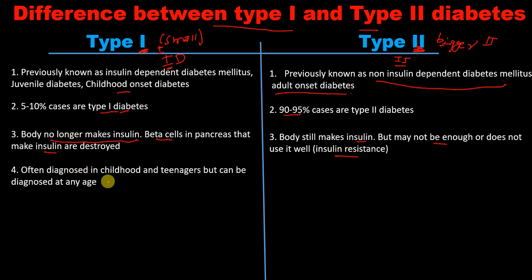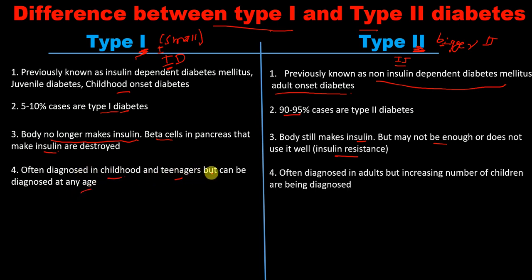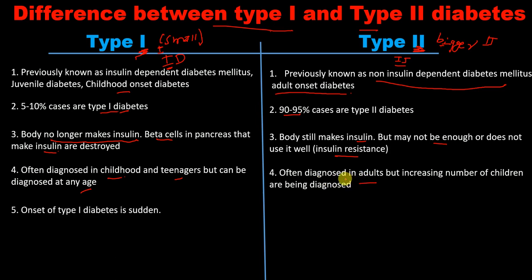Type 1 is often diagnosed in childhood or in teenagers — number 1 referring to something small, like a child — though it can be diagnosed at any age. Type 2 diabetes mellitus is typically diagnosed in adults, since number 2 is bigger, though an increasing number of children are also being diagnosed.